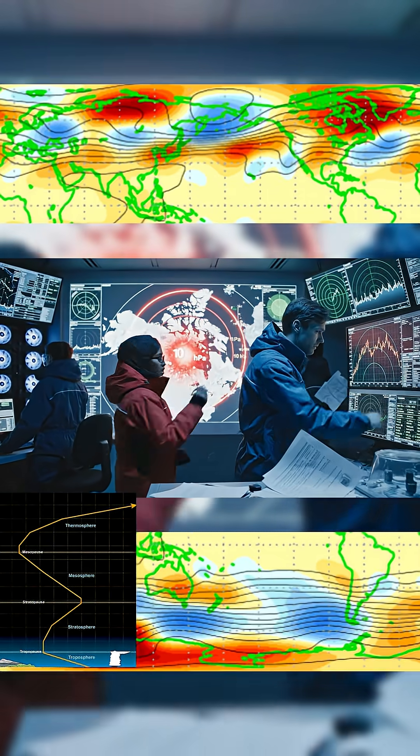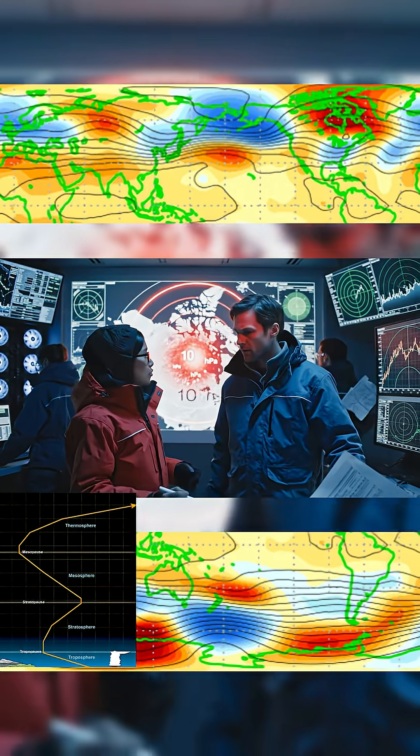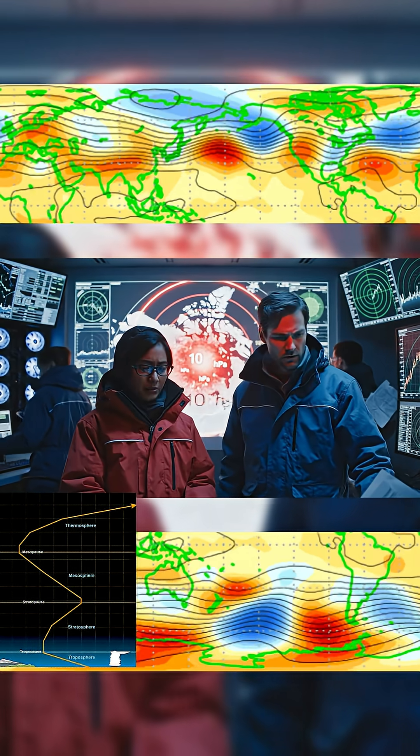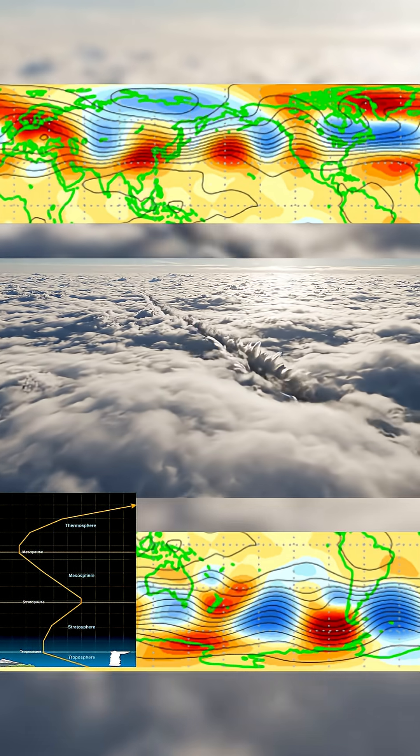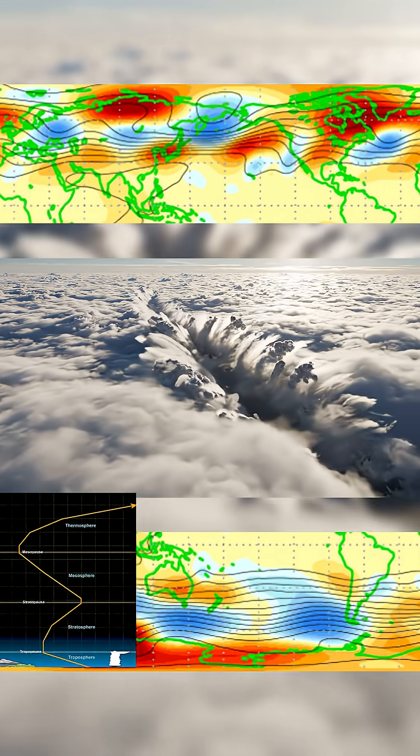Model data from the European Center for Medium-Range Weather Forecasts depicts the vortex splitting. One core drifting over Siberia, another tightening above northern Canada.